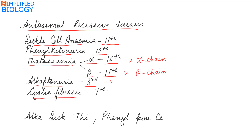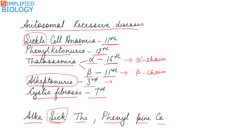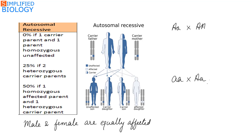Cystic fibrosis — the gene is present on the 7th chromosome. It affects the respiratory system and also the digestive system. The trick to remember these diseases is: 'alca sick thi phenyl penase' — alca is for alkaptonuria, sick is for sickle cell anemia, thi is for thalassemia, phenyl is for phenylketonuria, and se is for cystic fibrosis.